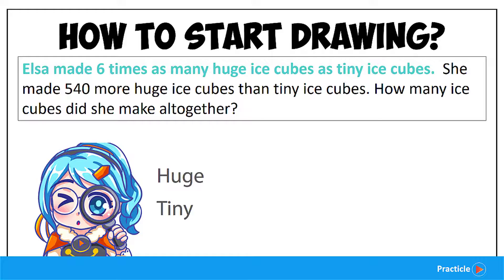Well, whenever we have a sentence like this, we'll look at the object that comes after the second 'as'. This will be the object that we are comparing with and it will always be represented by one unit.